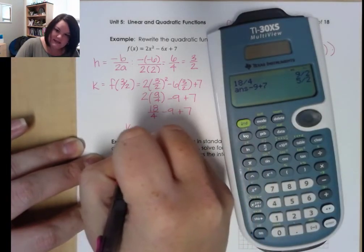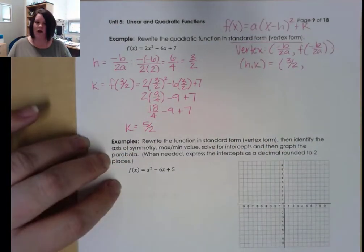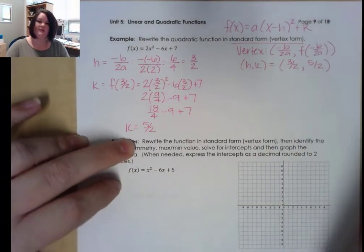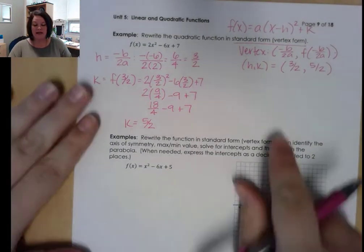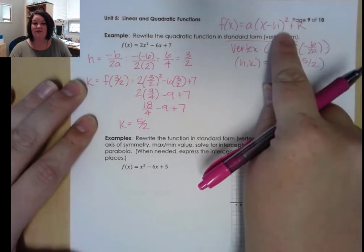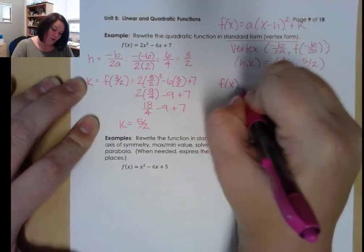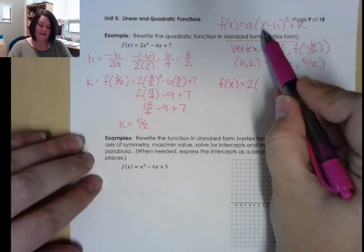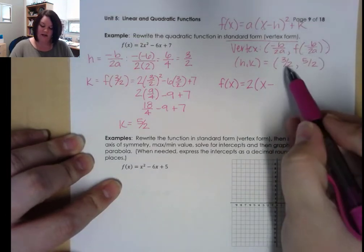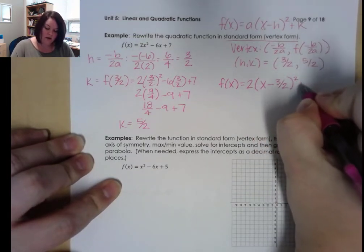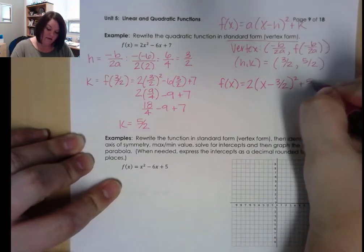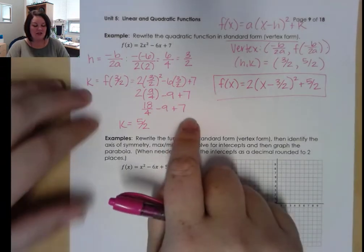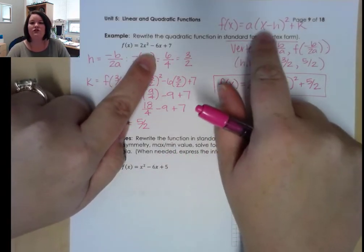We know that k is equal to 5 halves. So our vertex has h equals 3 halves and k equals 5 halves. Now that we know our vertex, we can write this function in vertex form. We need our leading coefficient, which was 2, then times x minus our h value of 3 halves, quantity squared, plus our k value of 5 halves. It's a quick and easy way of changing the function from general form into vertex form.